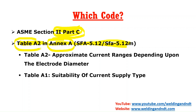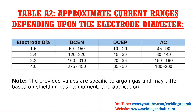If you go to ASME Section 2 Part C, you will see SFA 5.12, and after SFA 5.12 you will see Annex 1. In Annex 1, Table A2 contains the current requirements — approximate current ranges depending upon electrode diameter. There is also Table A1, which mentions the suitability of current types — meaning for which material, what will be the current setting.